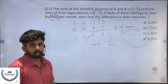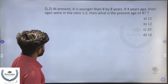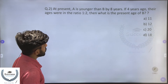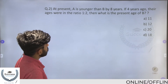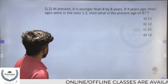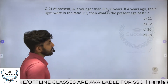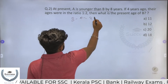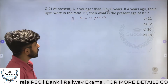Next question: At present, A is younger than B by 8 years. That is, B minus A equals 8 years — that is the first statement.